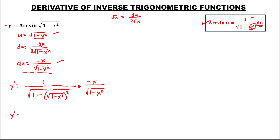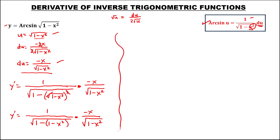Then to simplify, so we have y prime equals 1 over the square root of 1 minus — we can cancel now this radical — so this becomes 1 minus x squared, then times negative x, then over the square root of 1 minus x squared. Then y prime equals 1 over the square root of 1 — distribute now this negative — so this becomes negative 1, and this becomes positive x squared, then times negative x over the square root of 1 minus x squared.